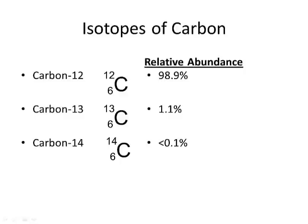Let's look at carbon for an example. Here we see the relative abundance of the three isotopes listed. There are other isotopes, but they are so uncommon they don't affect the average atomic mass. Carbon-12 is the most abundant, with 98.9% of all carbon atoms being carbon-12 — meaning they contain six protons and six neutrons. 1.1% are carbon-13, and less than 0.1% are carbon-14. Since carbon-14 is less than 0.1%, it's not going to affect our calculation enough for us to consider here.